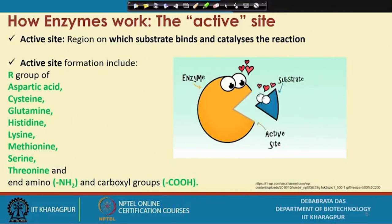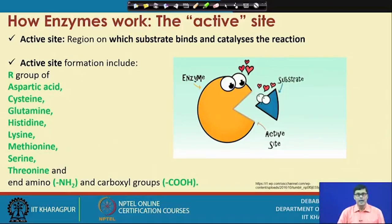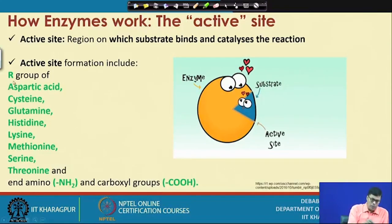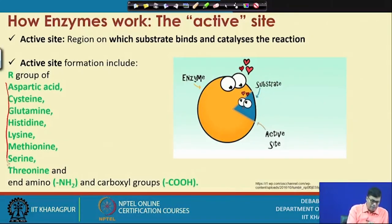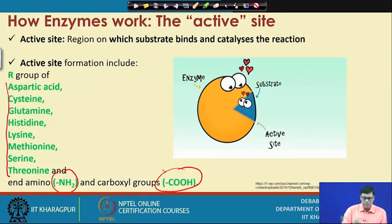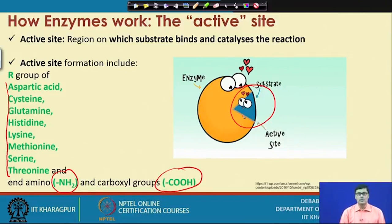The question is how this active site formation takes place. Out of 20 different amino acids, the R groups of 8 amino acids — aspartic acid, cysteine, glutamine, histidine, lysine, methionine, serine, and threonine — in combination with the amino and carboxylic acid groups form the active site, where the substrate sits. The key point is that protein with an active site we call an enzyme, and protein which does not have an active site we cannot call an enzyme, because an enzyme must react with the substrate and give the product.